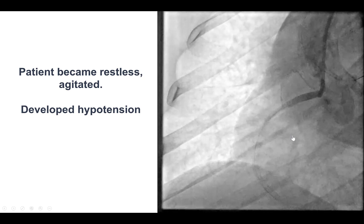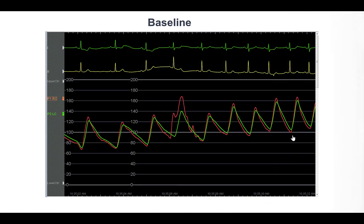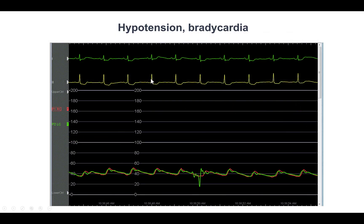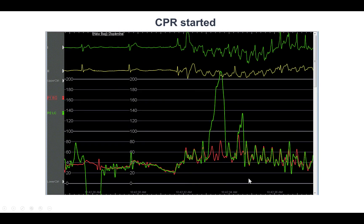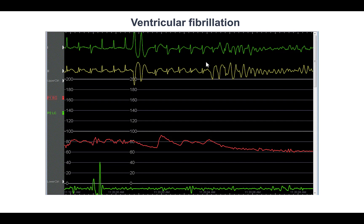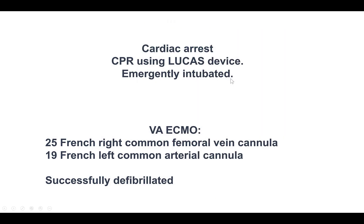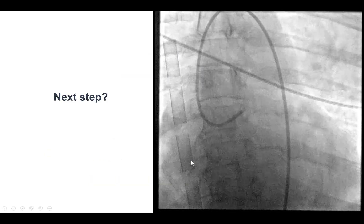At this point, the patient became agitated and restless and developed hypotension. Here is the patient now with ST-segment depressions as well as significant hypotension, which progressed into bradycardia and essentially cardiac arrest requiring CPR, followed by ventricular fibrillation. We clearly had a significant change in condition. The patient became agitated and we lost the guide position due to patient movements. The patient was intubated and then placed emergently on VA ECMO with a 25 French common femoral vein cannula and a 19 French arterial cannula, and the patient could be successfully defibrillated.